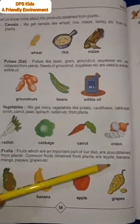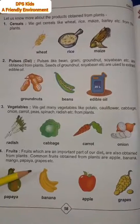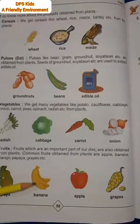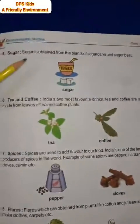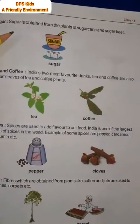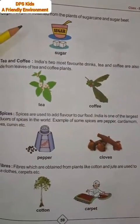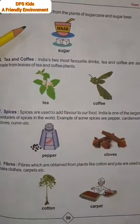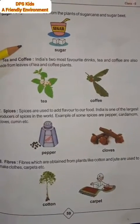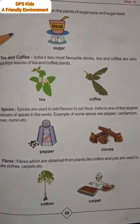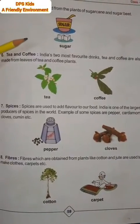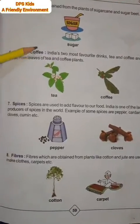For example: apple, banana, mango, papaya, grapes, etc. यह सब हमें plants से मिलते हैं। Sugar यानि शक्कर — sugar is obtained from the plants of sugarcane and sugar beet। जो गन्ना होता है और जो sugar beet होता है, उनसे हम sugar बनाते हैं।